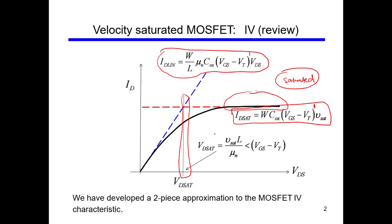VD saturation for the velocity saturated model is equal to Vsat, the saturated velocity — on the order of 10 to the power 7 centimeters per second — times L divided by mobility in the channel. This is the initial reason why devices were called velocity saturated: electrons should not move faster than this velocity limit, though we will see exceptions.